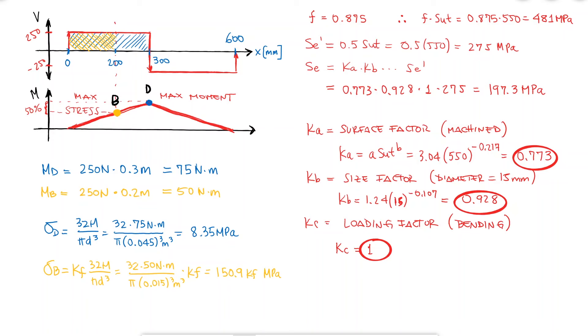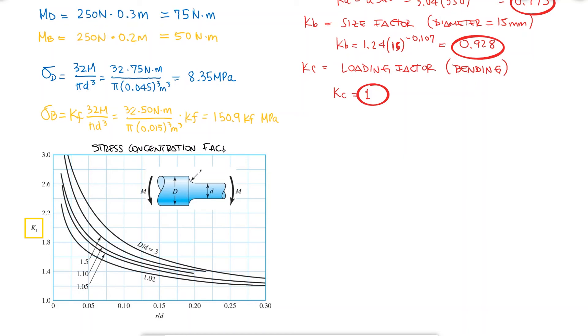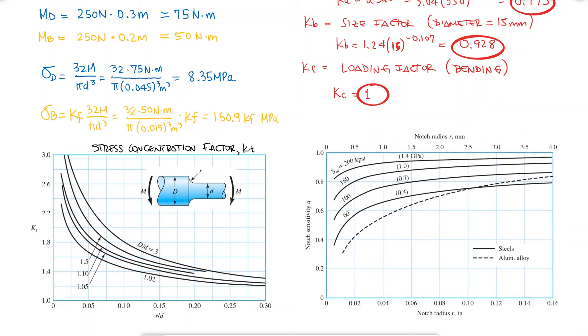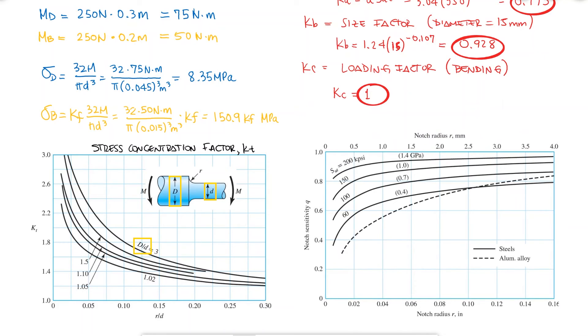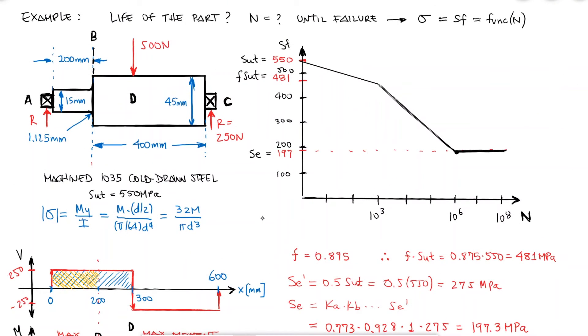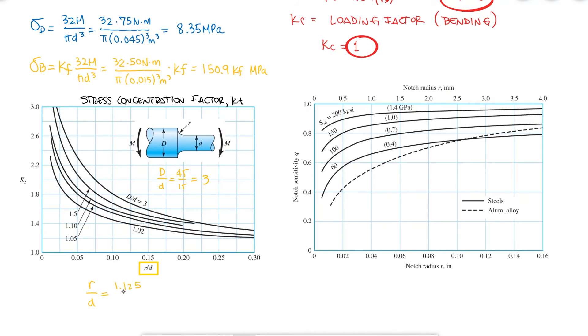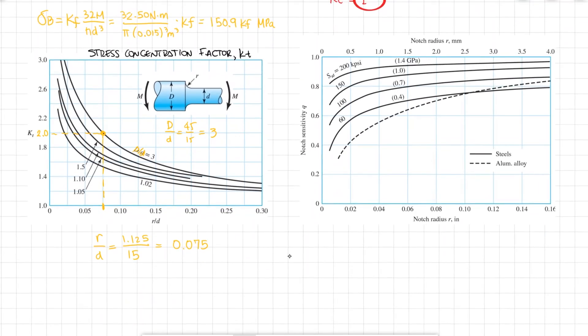All I need to do now is find the fatigue stress concentration factor, KF. And to do that, I need the stress concentration factor for static loading, KT, and the notch sensitivity, Q. Remember, not KTS or QS, since these are normal stresses, not shearing. Since the larger diameter capital D is equal to 45 mm, and the lower case d is equal to 15 mm, I know that the D over d ratio is equal to 3. Checking the value of the radius of the notch and using it to find the ratio R over d, we find that the value for the x axis is going to be 0.075, exactly between 0.05 and 0.10, which if we're looking at the curve of D over d equal to 3, gives us a KT of 2.0, right between 1.8 and 2.2.